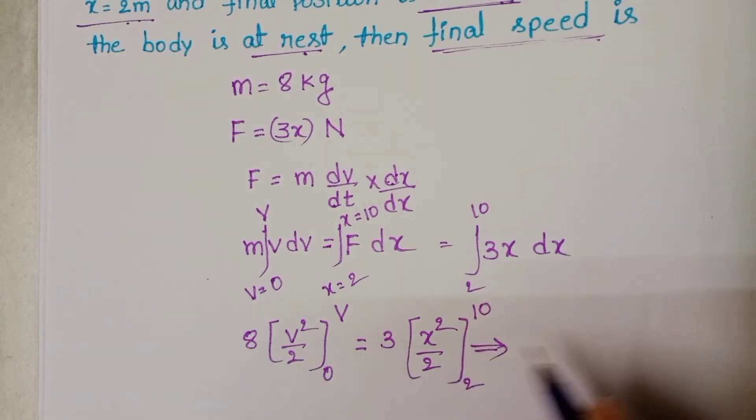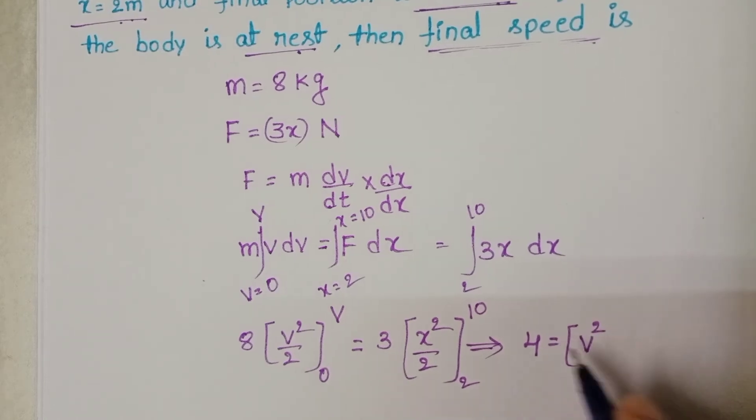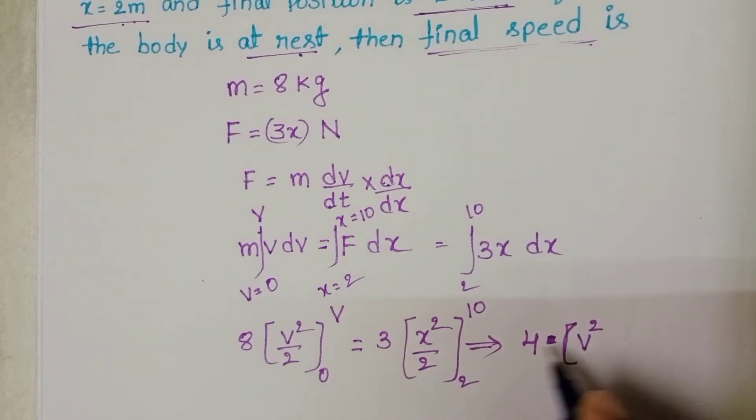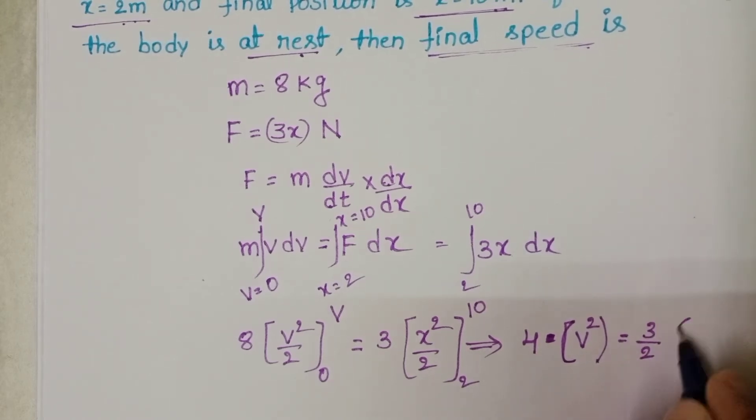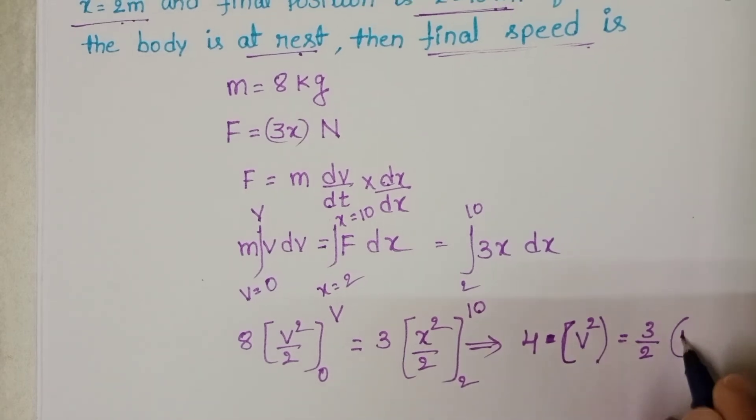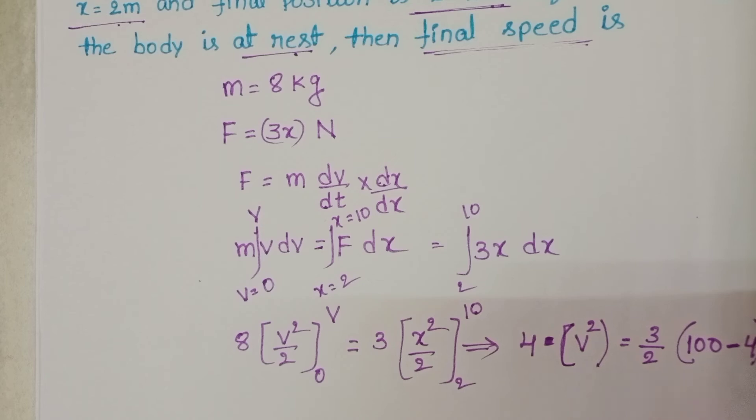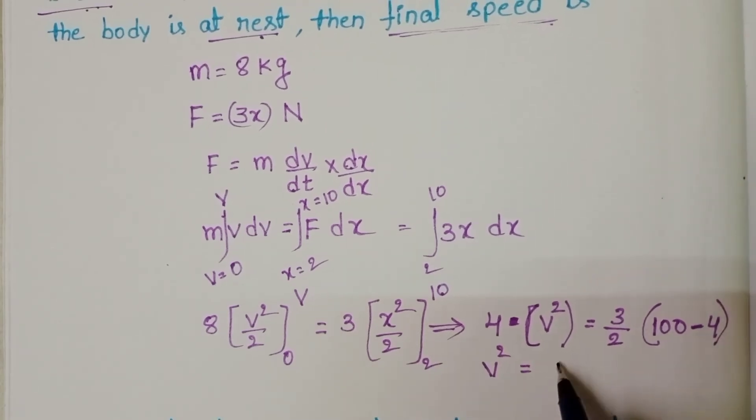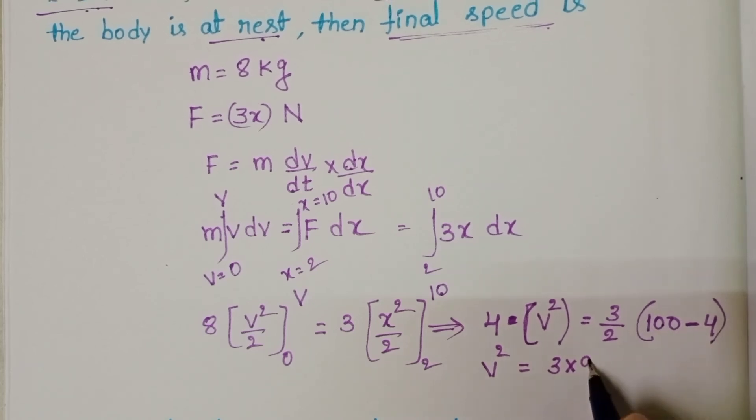Here 8 by 2, 4 equals upper limit v square minus lower limit is 0. So 4 into v square equals 3 by 2 into, in place of x first substitute 10. 10 whole square 100 minus 2 square it becomes 4. So v square equals 3 into 100 minus 4, 96 by 8.